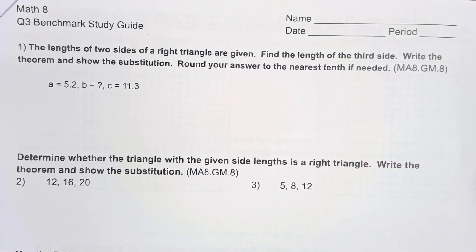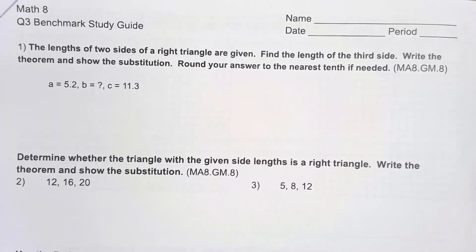Hello, today we are going to be going through your quarter three benchmark study guide. The first problem: the lengths of two sides of a right triangle are given. Find the length of the third side. Write the theorem and show the substitution. Round your answer to the nearest tenth if needed.